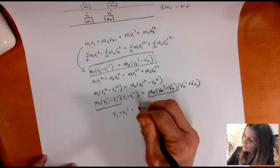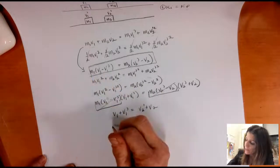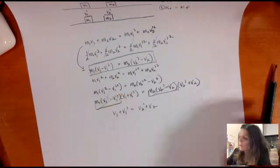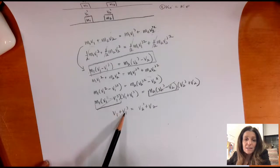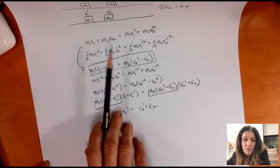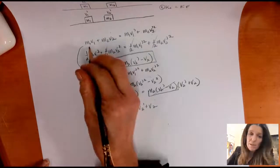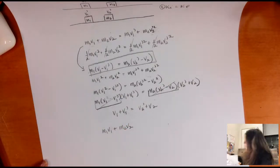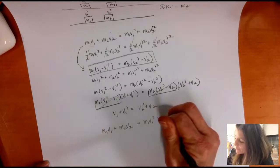V1 plus V1 prime equals V2 prime plus V2. And I also have my original momentum conservation equation: M1 V1 plus M2 V2 equals M1 V1 prime plus M2 V2 prime. Out of that crazy quadratic, I actually got a nice simple linear equation that's going to be super useful. I can solve it for V1 or V2 prime pretty easily and plug it back into the momentum equation — that lets me avoid dealing with squares and all the messy business.